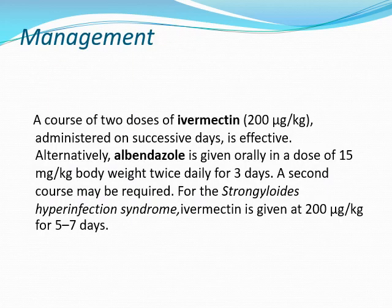For treatment: ivermectin in a dose of 200 microgram per kg administered on two successive days is very effective. If not available, albendazole 15 mg per kg body weight twice daily for three days can be given. For Strongyloides hyperinfection syndrome, ivermectin is given at 200 microgram per kg for at least five to seven days. هذا الاستثناء الذي يستوجب الإيفرمكتين اسمه Strongyloides hyperinfection syndrome.